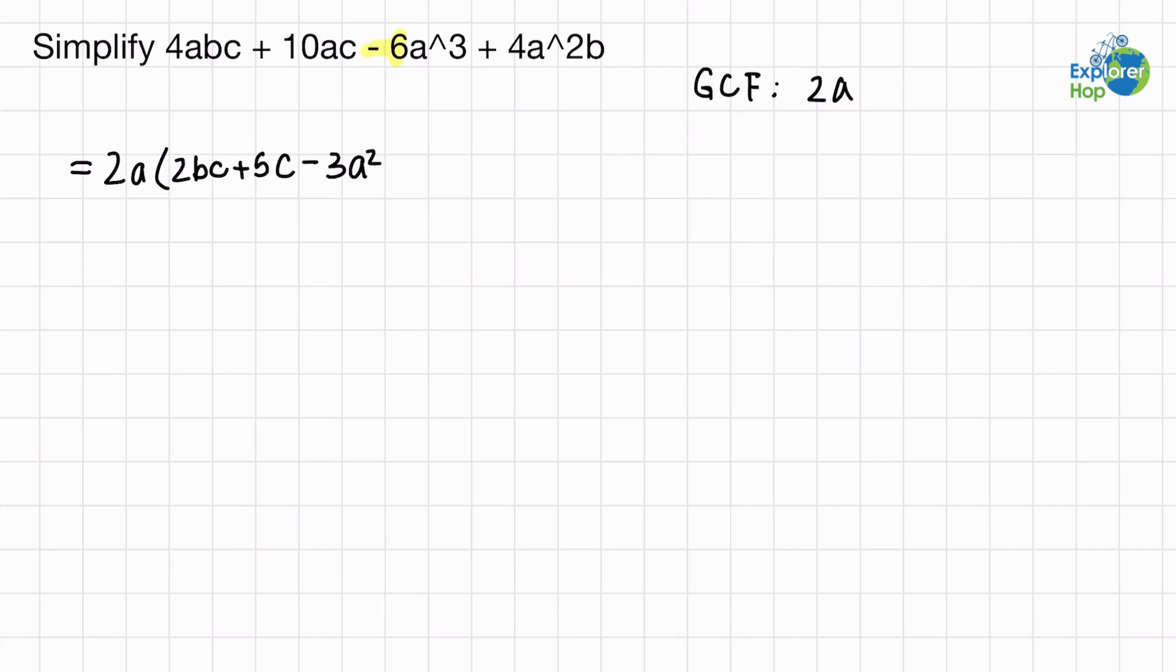And last but not least, positive 4 divided by positive 2 equals positive 2. a squared divided by a to the power of 1 equals a, and we're left with b.